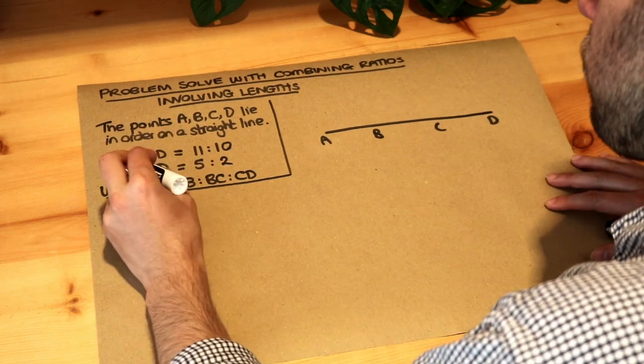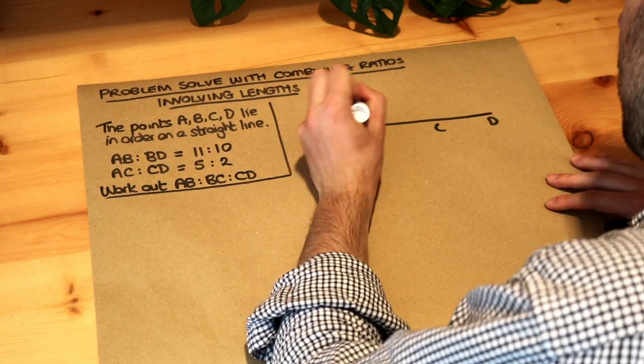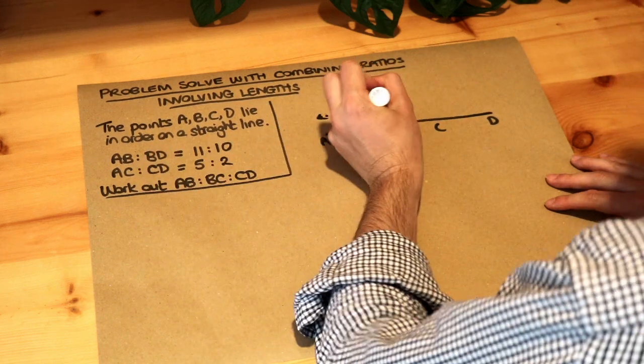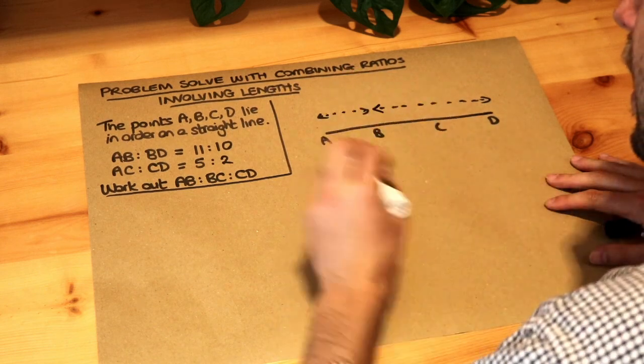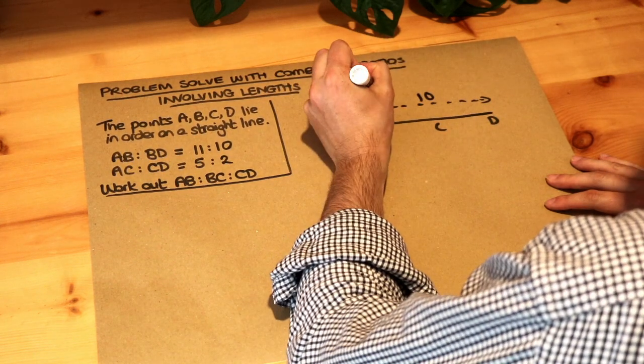We're told the ratio of AB to BD, so B to D is from here to here, is 11 to 10. So let's put that on there: 11 to 10.